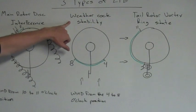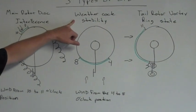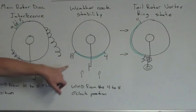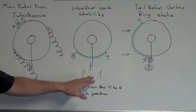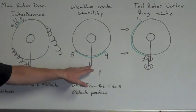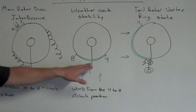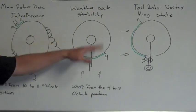The second type is called Weather Cock Stability, otherwise known as Weather Veining. It occurs when your wind is from the 8 and the 4 o'clock position. What happens is the wind grabs ahold of the tail surfaces and the rotor blades themselves and wants to throw them one way or the other. It can make it very difficult to keep the nose pointed straight.